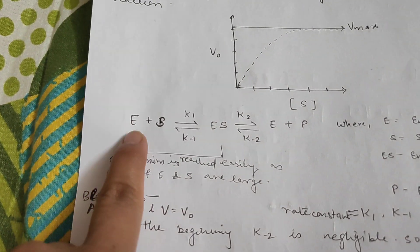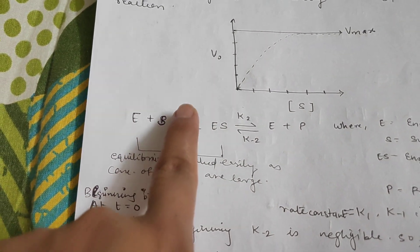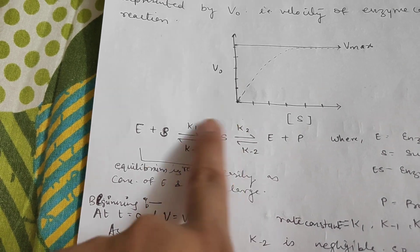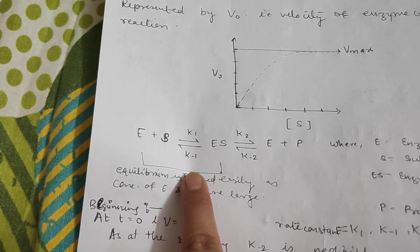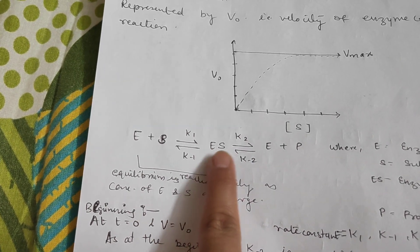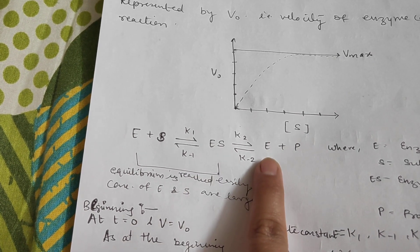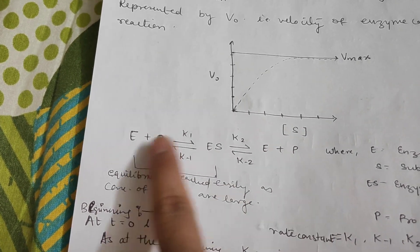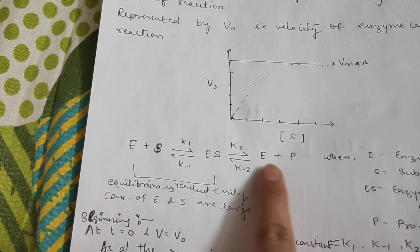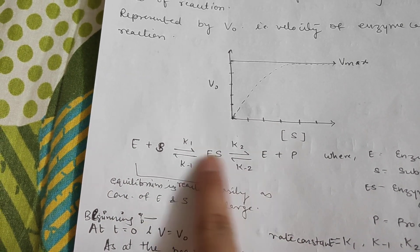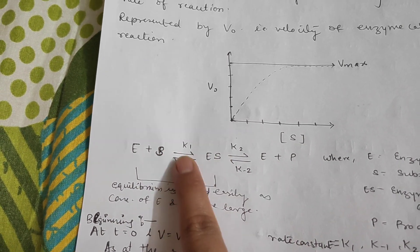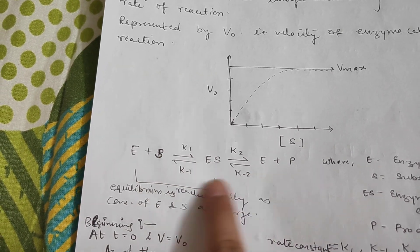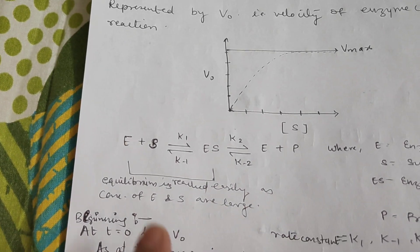Here E means enzyme, S means substrate, K1, K-1, K2, and K-2 are the rate constants for the reaction. ES is the enzyme-substrate complex, E again is the free enzyme, and P is the product. This reaction proceeds in both directions — it is reversible, going in the forward direction as well as the reverse direction.